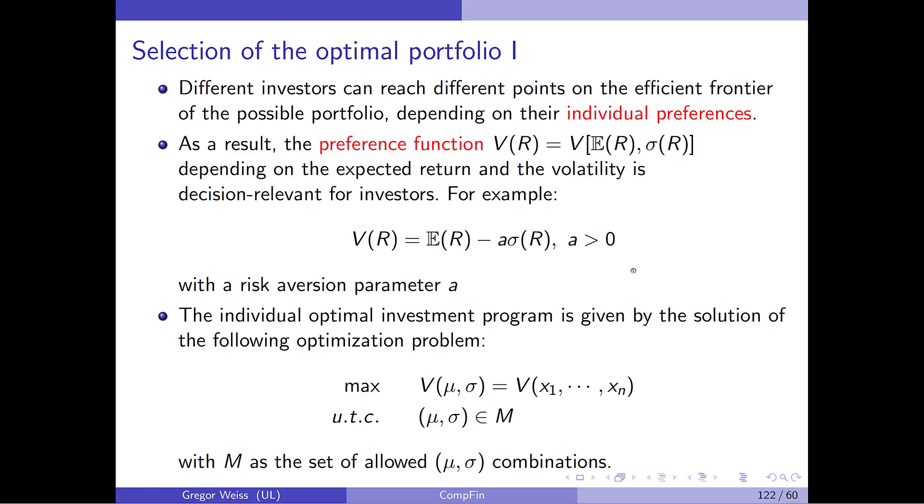So, as a result, we actually have to look at a preference function or a utility function that gives us a utility or a preference value based on those two parameters, expected return and volatility. So, for example, this could be a function like this where we have the expected return. We subtract the volatility scaled up by a factor of a and a is obviously a risk aversion parameter that governs how detrimental volatility is seen.